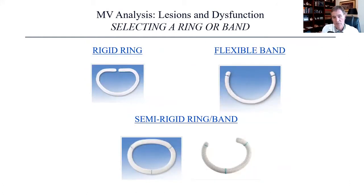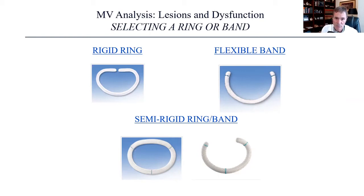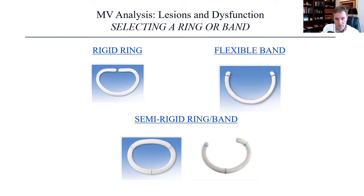Rings can be either a rigid ring — the classic original that Carpentier developed — or a flexible band. I prefer bands because, as with the tricuspid valve where the septal portion doesn't dilate, in the mitral valve the portion between the trigones in the anterior leaflet doesn't dilate. Supporting a repair can therefore be done with a band alone. If you have ischemia, though, that is one indication for a full ring.